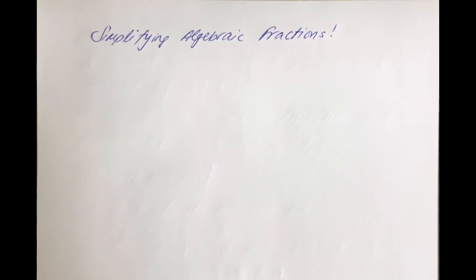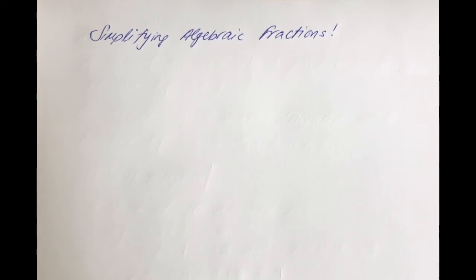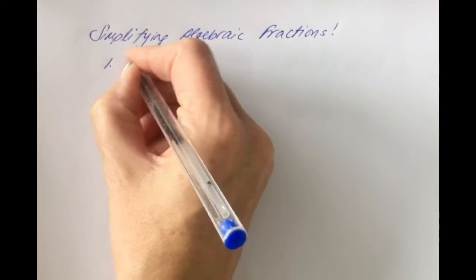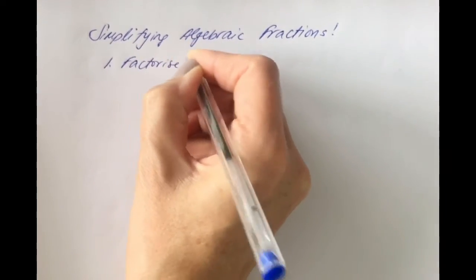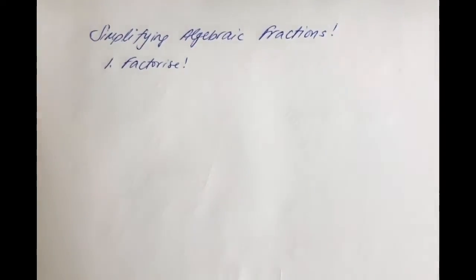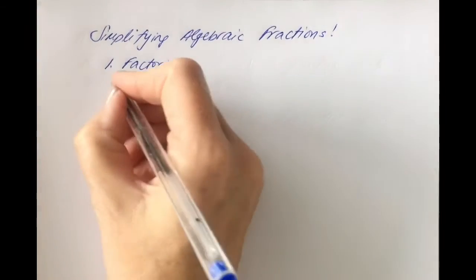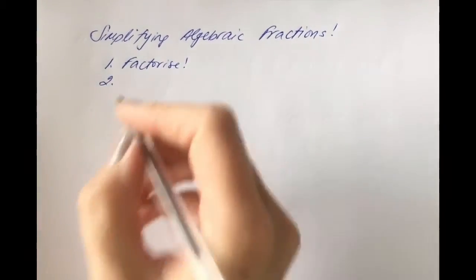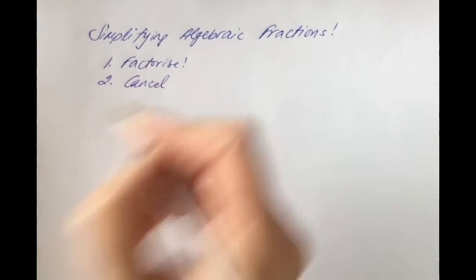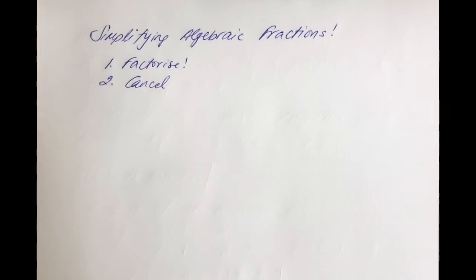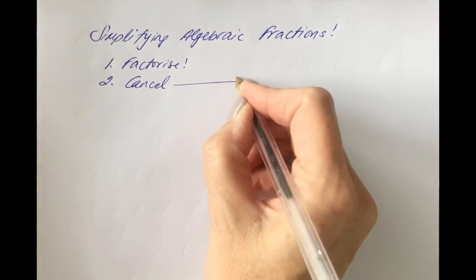In this video we're going to look at simplifying algebraic fractions. There are two key things you need to do: first, factorize anything that you can factorize, and second, cancel whatever you can cancel.